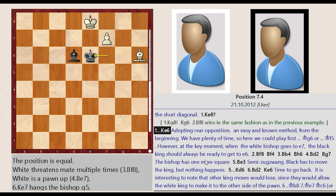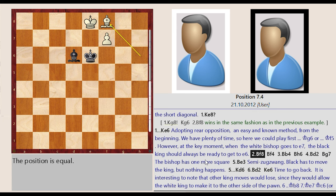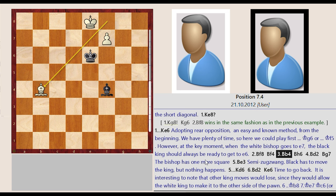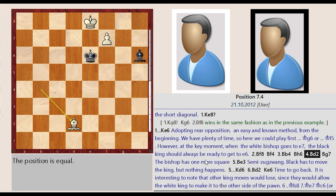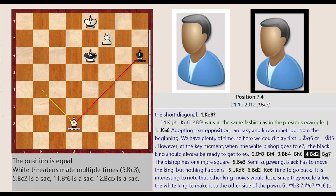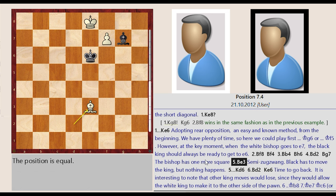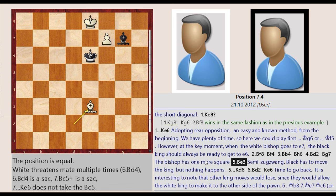The Black king should always be ready to get to E6. Bishop H6 F8. Bishop D6 F4. Bishop F8 B4. Bishop F4 H6. Bishop B4 D2. Bishop H6 G7. The bishop has one more square. Bishop D2 E3. Semi-zugzwang. Black